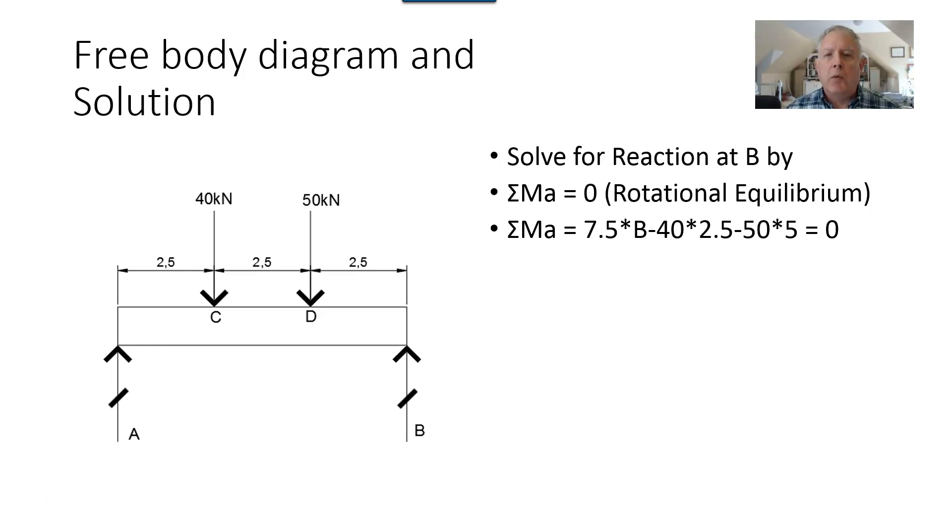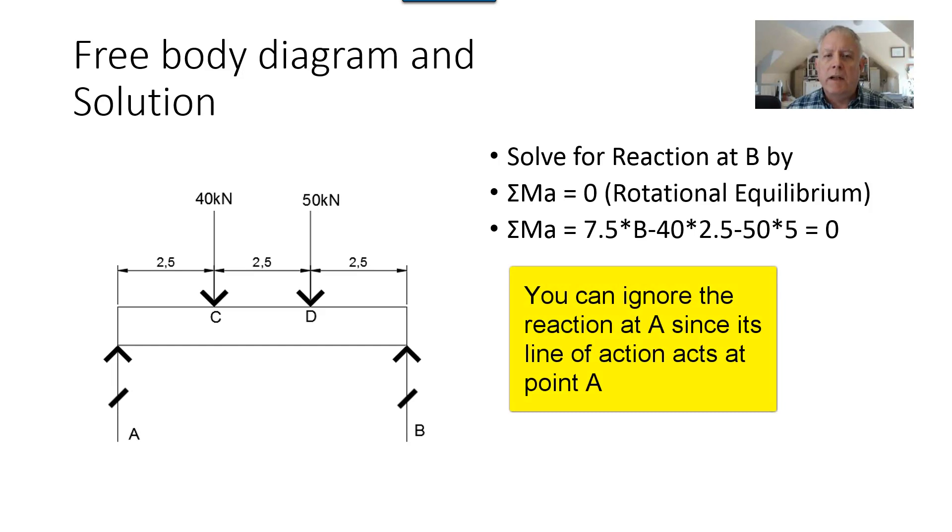Then minus 40, working left to right, 40 times 2.5 meters minus 50 times 5 meters equals zero. Notice that in each case, a distance is measured from point A to the line of action of the force. And we're only concerned about horizontal distances here because all the forces are vertical.